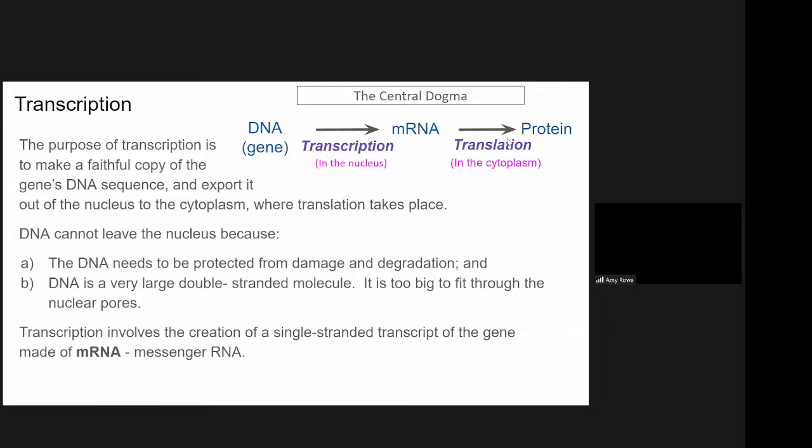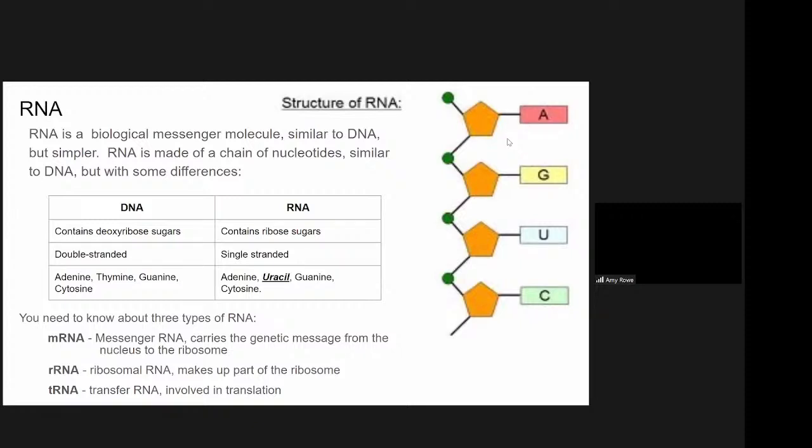So that process is what we call transcription. Transcription is the process where the DNA message is transcribed or rewritten into mRNA so that it can leave the nucleus. The mRNA is designed to be a faithful copy of the gene's DNA sequence. And we make that copy so that it can be exported out of the nucleus to the cytoplasm where translation and the rest of protein synthesis takes place. So as I mentioned, DNA can't leave the nucleus because it needs to be protected from damage and degradation so that we store it away in the nucleus. And it's also very large. So it's not able to fit through a nuclear pore because it's just too big. So transcription involves the creation of making a single-stranded copy of our gene, but we're going to make it out of mRNA, which is a single-stranded molecule that is able to leave the nucleus. So a bit about RNA. There are three different types you're going to need to know about. The first one I mentioned, which was mRNA or messenger RNA, and it's responsible for carrying the genetic message from the DNA in the nucleus out to the ribosome and the cytoplasm. Other types you're going to hear about are ribosomal RNA. So it makes up part of the ribosome, which is a very important organelle in the cytoplasm that's responsible for protein synthesis. And also tRNA or transfer RNA, which is involved in the translation process, the second stage of protein synthesis, and that occurs at the ribosome.